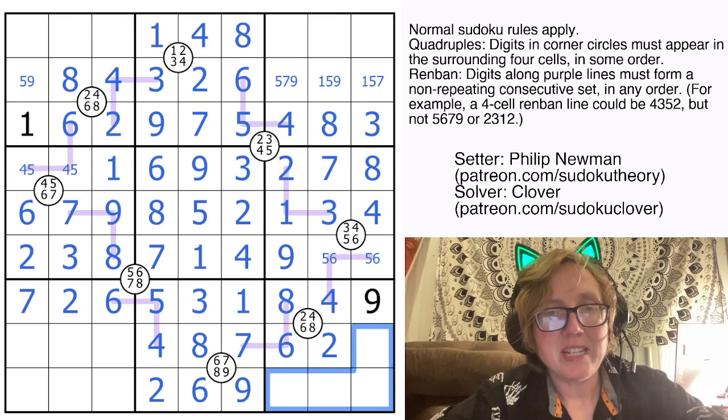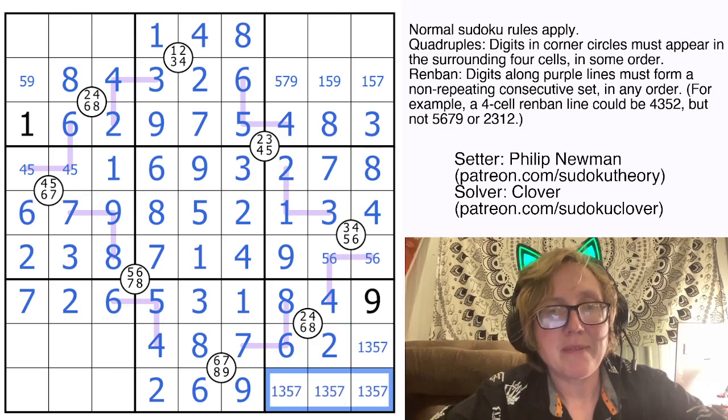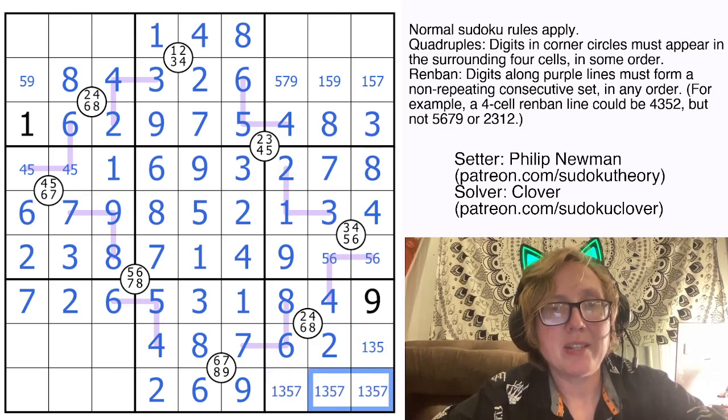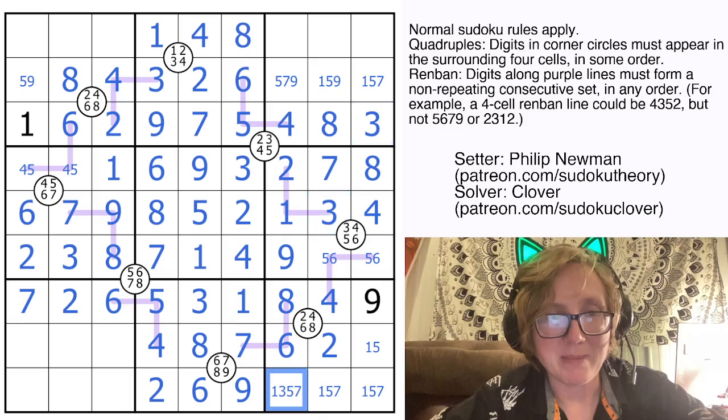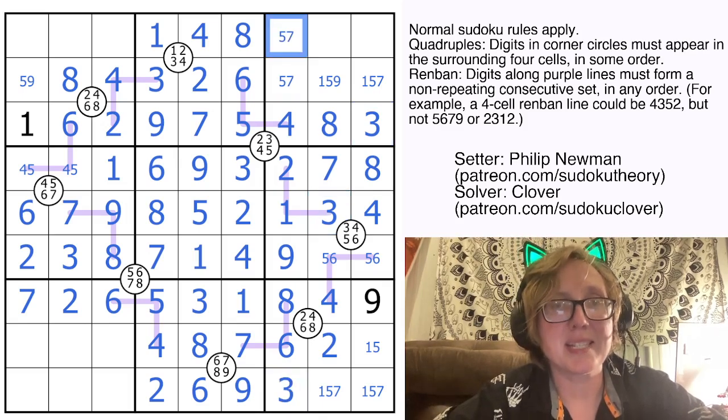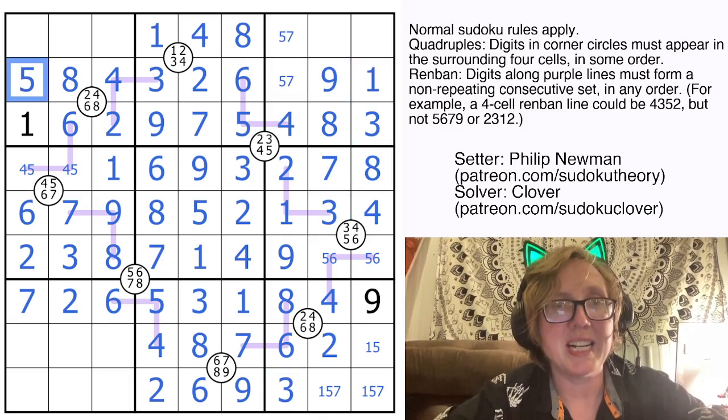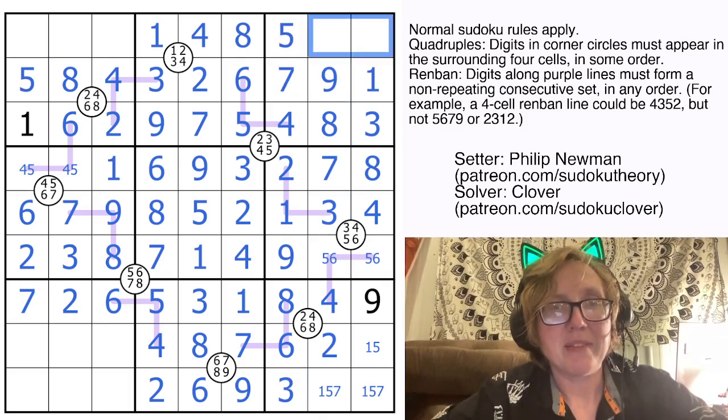Here we still need 1, 3, 5, and 7 to finish this region. That can't be our 7. These cells can't be 3. Okay. That's going to be it. So we're going to have a hidden 3 in region 9 that can only go in that position. That's not a 9, so that's a 5, 7 pair, making that a 1 and a 9, a 5 and a 7.